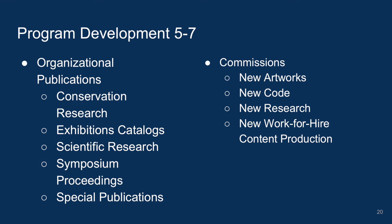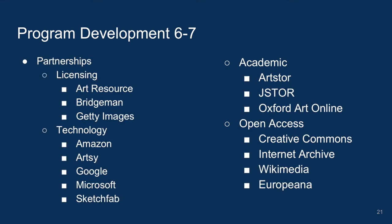When it comes to commissions, many museums work in partnership with individual creators — they commission new artworks, new code, new research, work for hire — and these new products that draw on museum collections should be made openly available when they can. For partnerships, I've given examples of the types of organizations you can work with: known players in licensing; technology partners like Google, Microsoft, Sketchfab, and Artsy; academic databases and research hubs like JSTOR and Oxford Art Online; and open access partners — Creative Commons, Internet Archive, Wikimedia, and Europeana. We in the United States love working with Europeana through the efforts of Europeana Pro and Douglas McCarthy to communicate the positive impact.